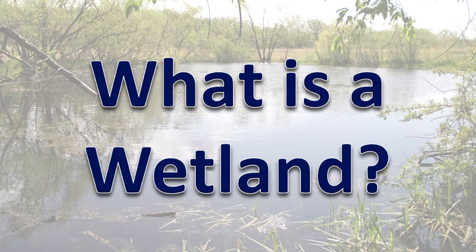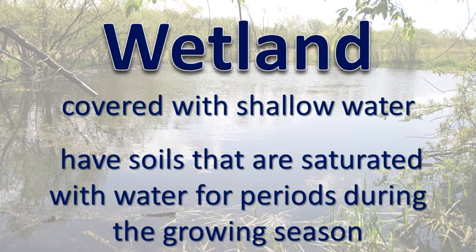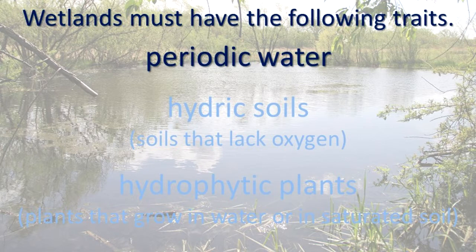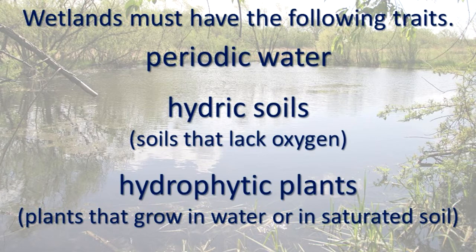What is a wetland? Wetlands are areas that are either covered with shallow water or have soils that are saturated with water for periods during the growing season. Wetlands must have the following traits: periodic water, hydric soils — soils that lack oxygen — and hydrophytic plants, which are plants that grow in water or in saturated soil.